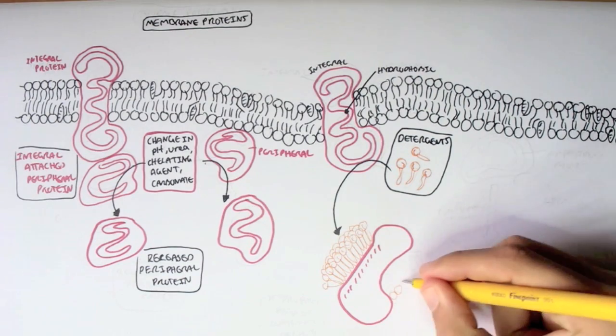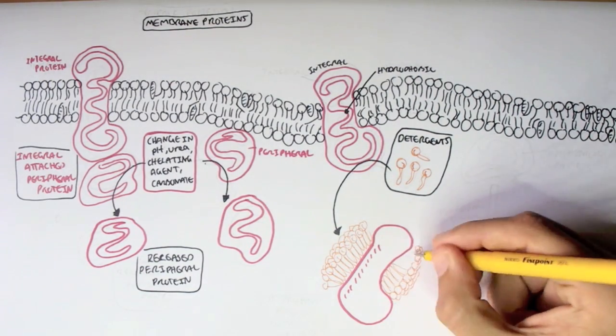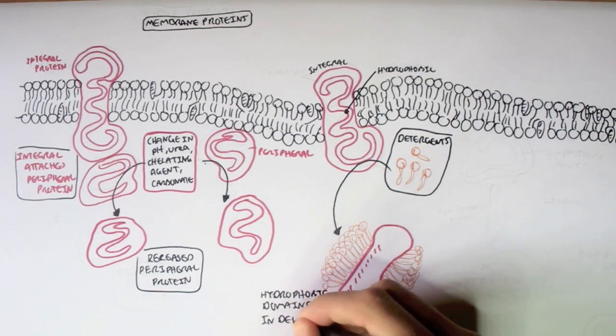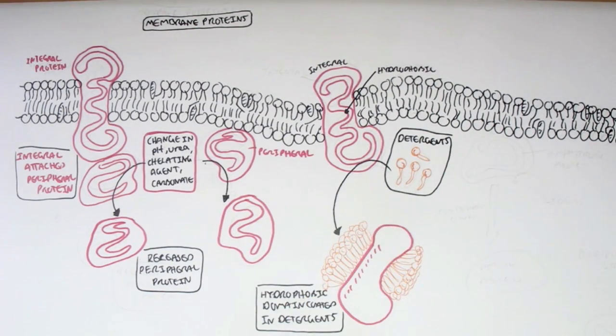So what actually allows integral proteins to be released from the lipid membrane? Well, actually detergents can do this. What detergents do is that they bind to this hydrophobic domain which usually is within the bilayer and it basically surrounds the hydrophobic domain, and this allows the integral proteins to be released from the lipid bilayer.